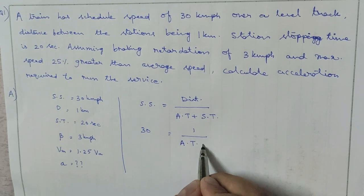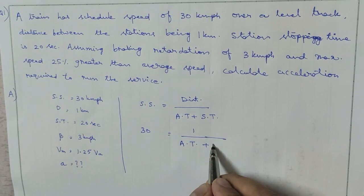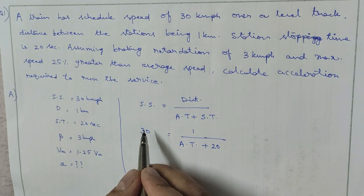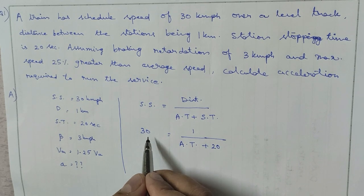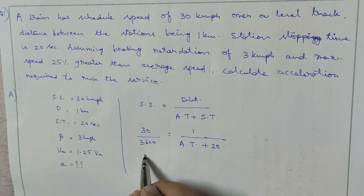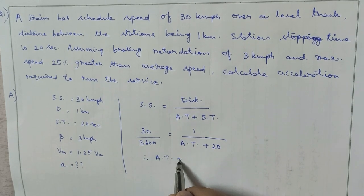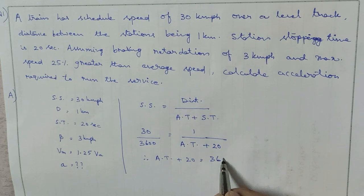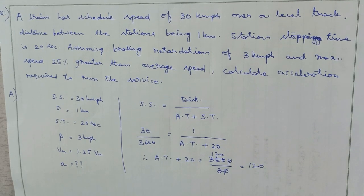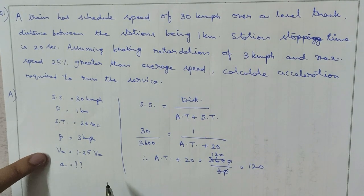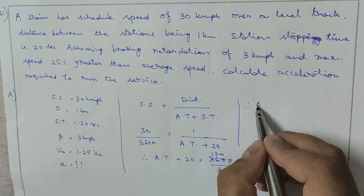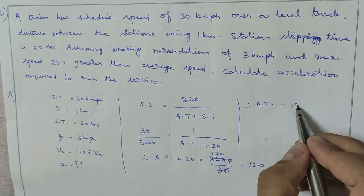The stopping time is 20 seconds. We need to convert 30 kmph into km per second by dividing by 3600. So actual time + 20 = 3600 ÷ 30 = 120 seconds.